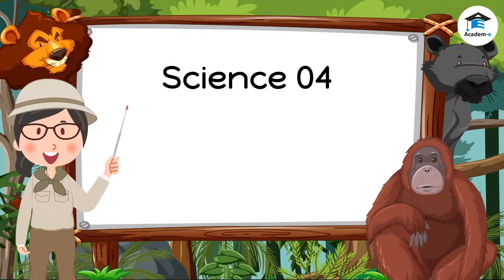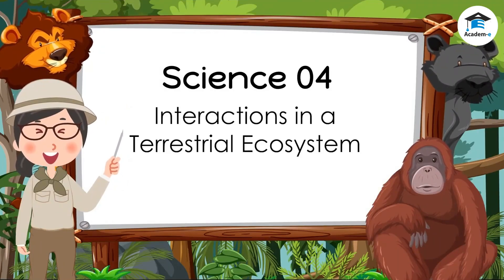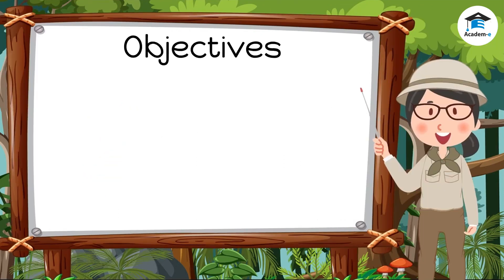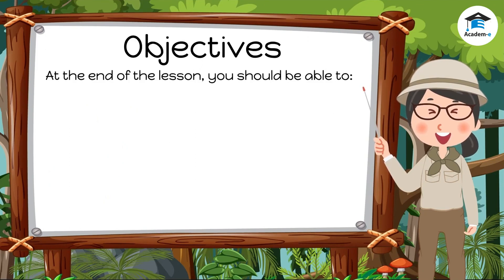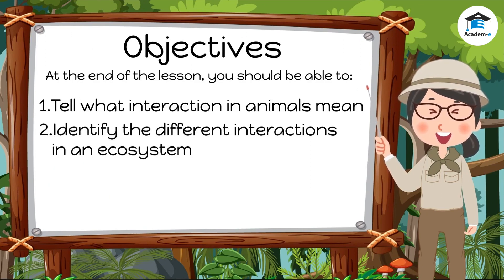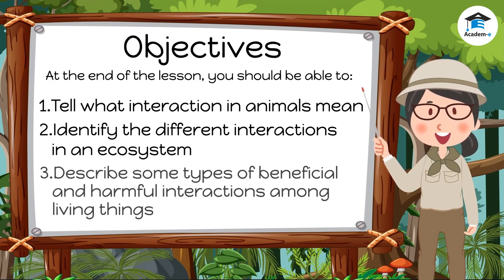Science: Interactions in a Terrestrial Ecosystem. At the end of the lesson, you should be able to tell what interaction in animals means, identify the different interactions in an ecosystem, and describe some types of beneficial and harmful interactions among living things.